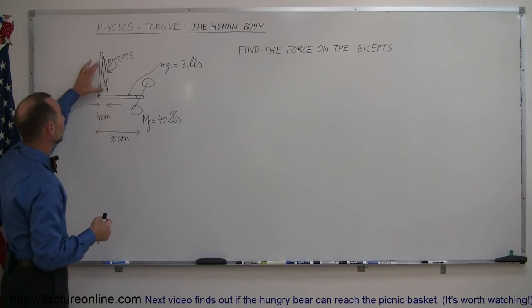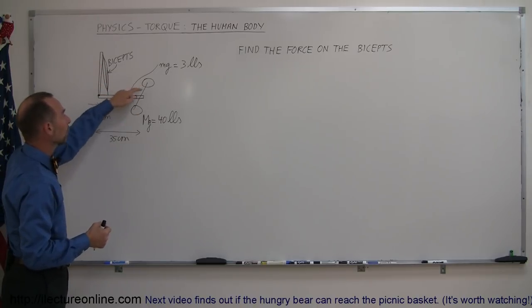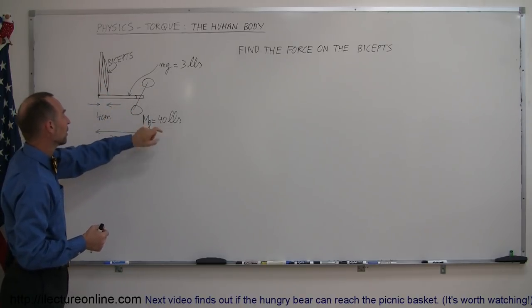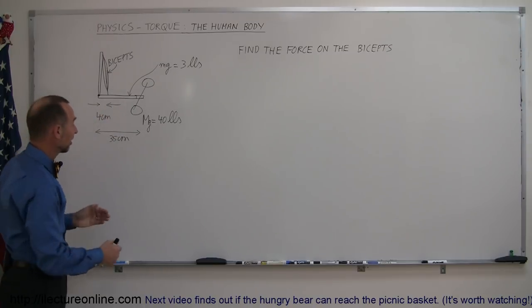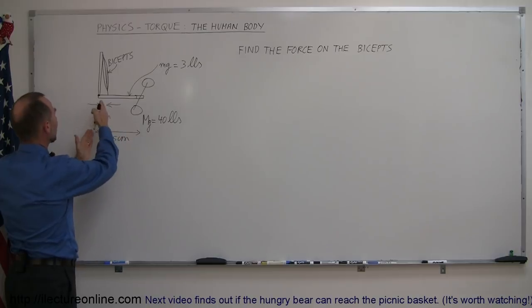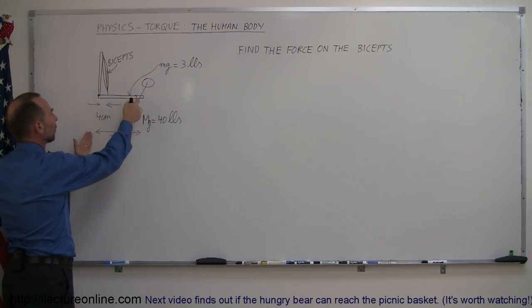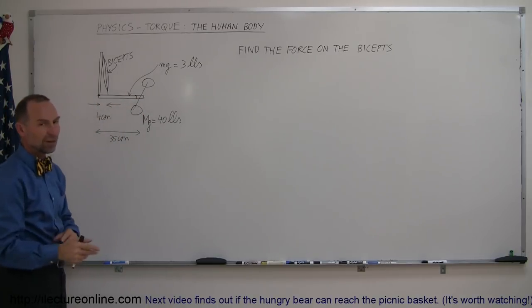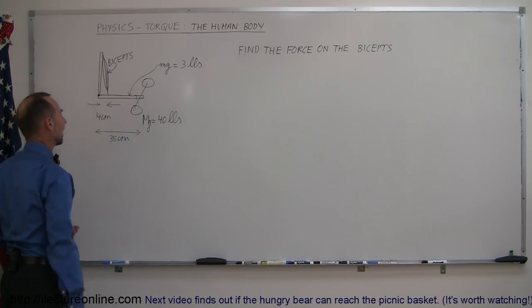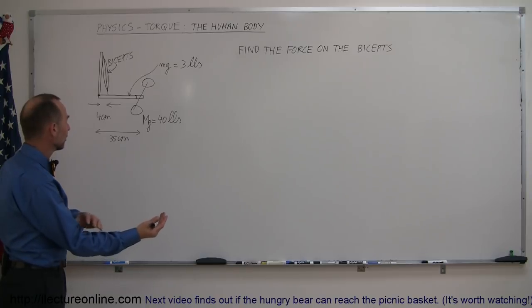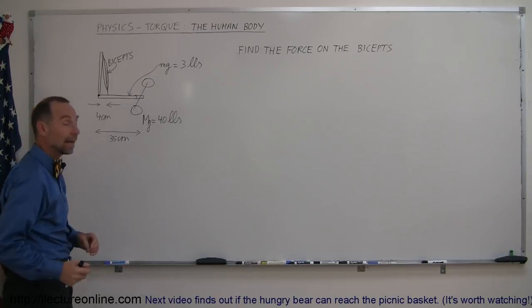The question then becomes what is the force required on the bicep if the barbell weight is 40 pounds and the forearm has a weight of about 3 pounds. Assuming the distance from the joint in the elbow to where the barbell is held is about 35 centimeters and assuming that the center mass of the forearm is roughly at the halfway point between the palm of the hand and the elbow joint.